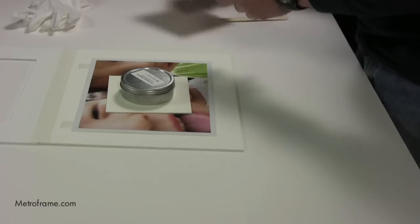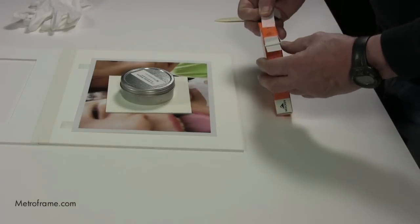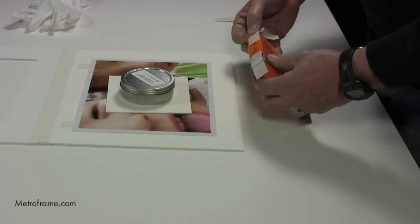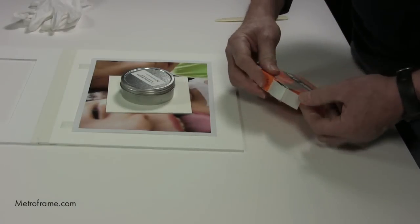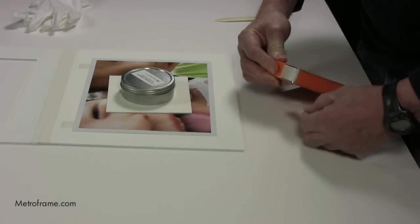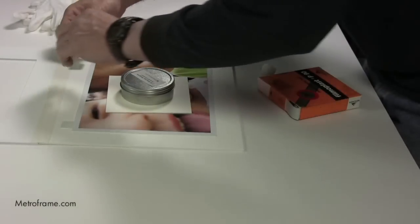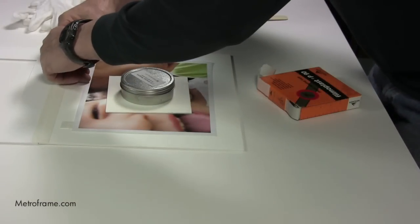Take the tape and tear it off and place it over the hinge that is on the back of the artwork and burnish it down. This method is called a t-hinge and is used on artwork that is being matted.